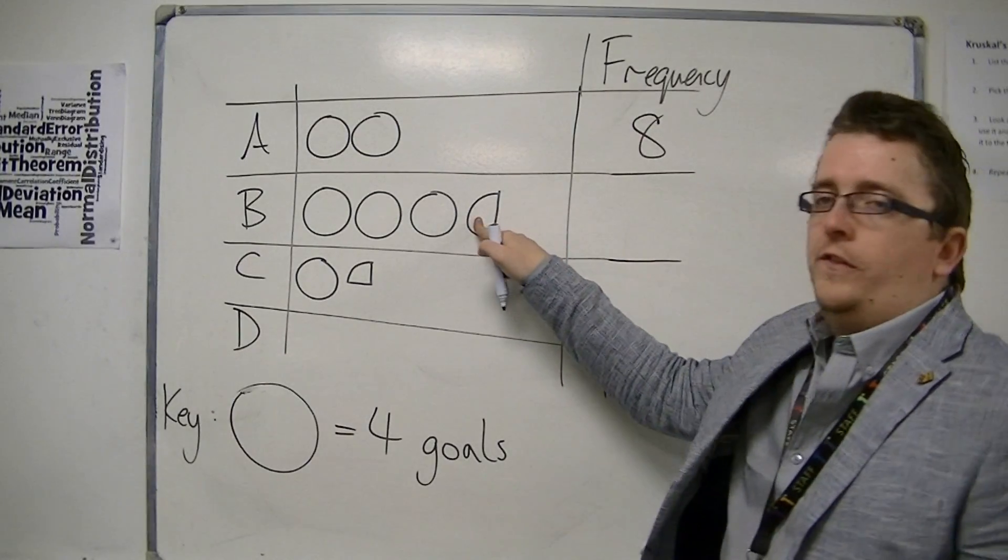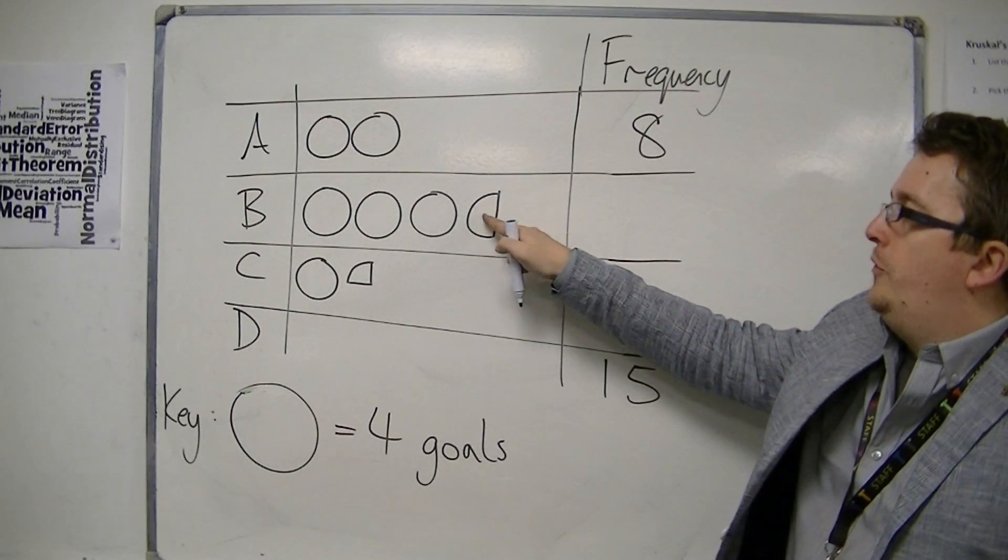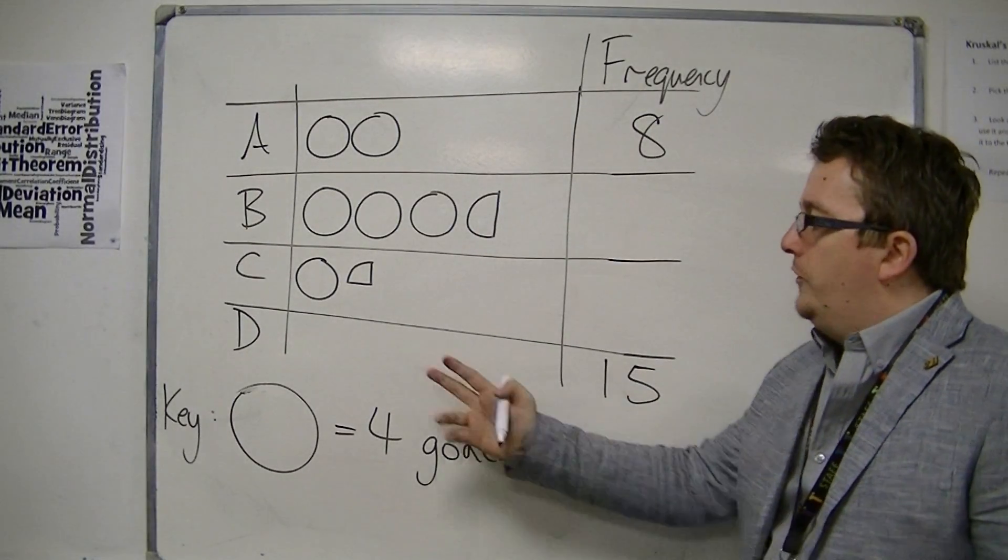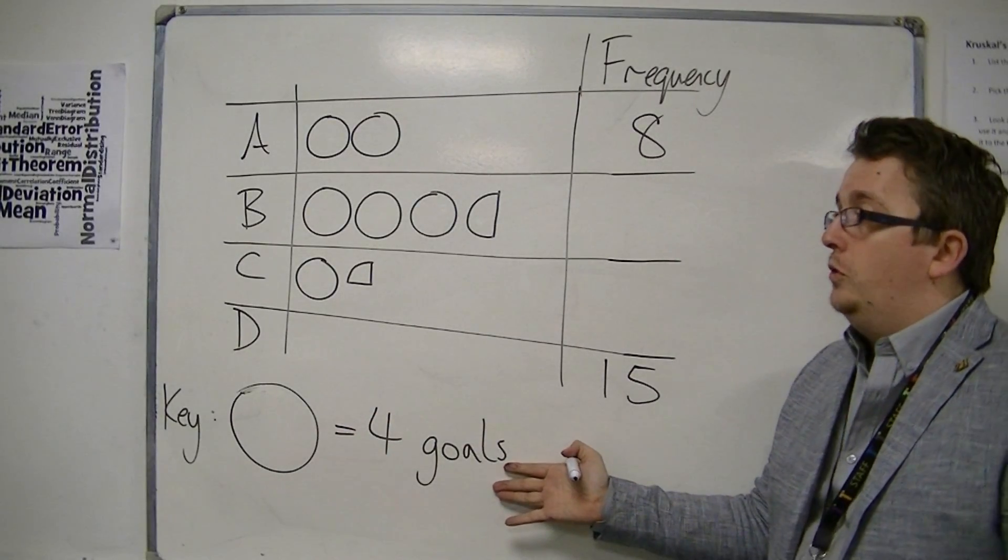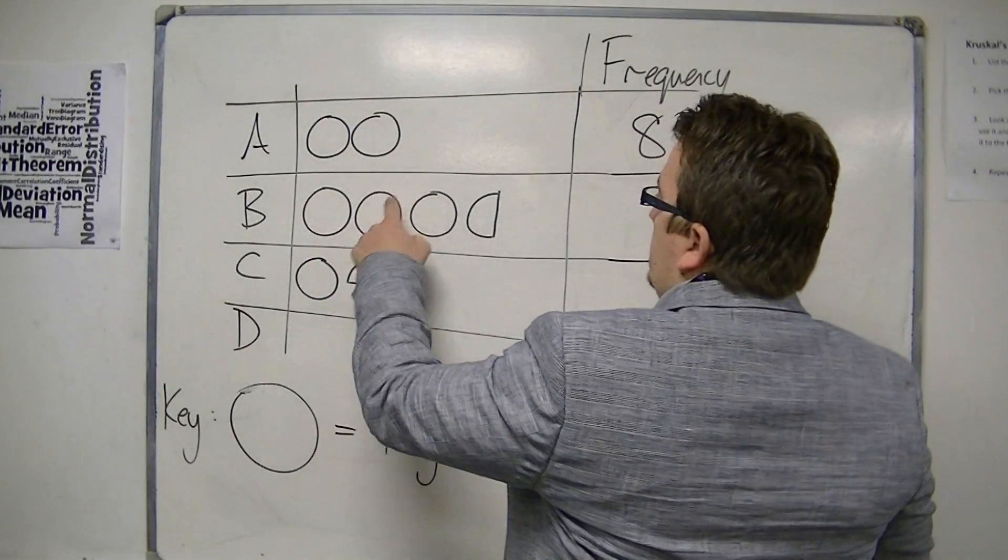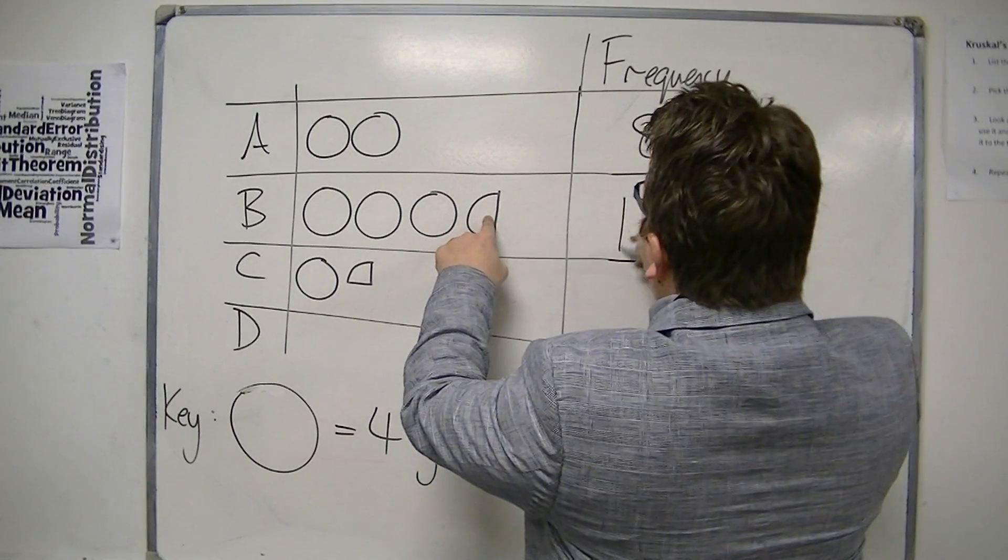And then we've got half the circle, and that must represent another two goals. So half the circle must be two if the whole circle is four. So four, eight, twelve, fourteen goals.